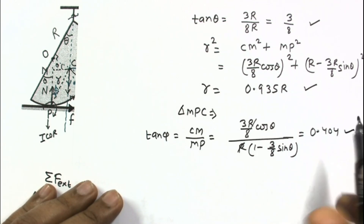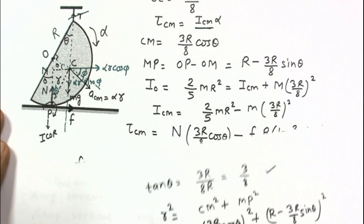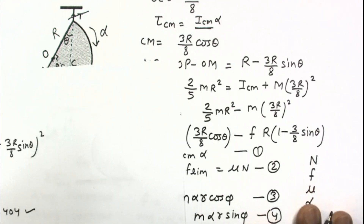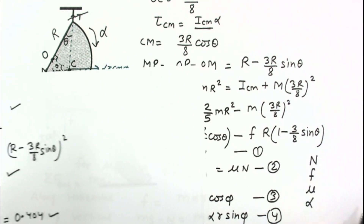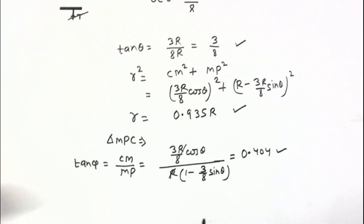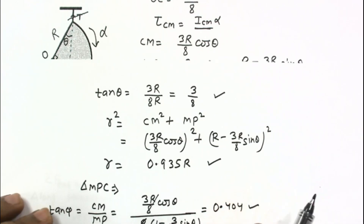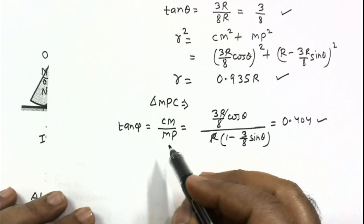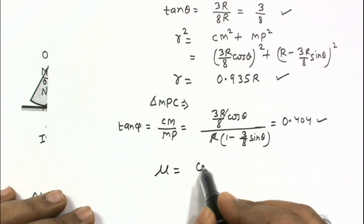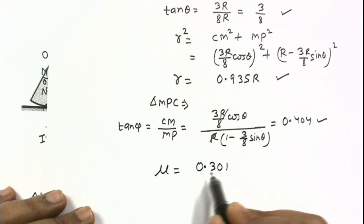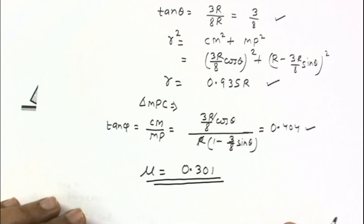After substituting all the geometric values — theta, phi, and the distance r — into the four equations and solving, the minimum value of the coefficient of friction comes out to be approximately μ = 0.301. This is the final answer to the problem.